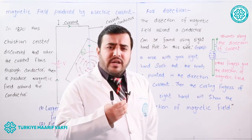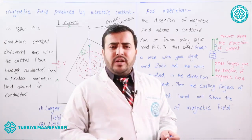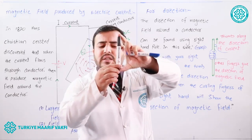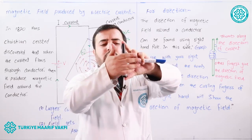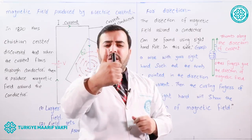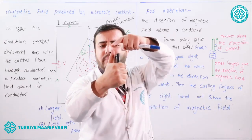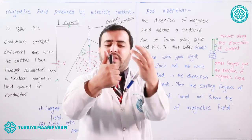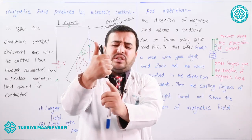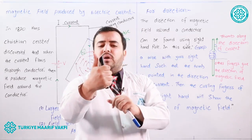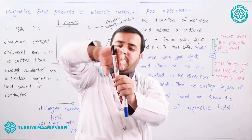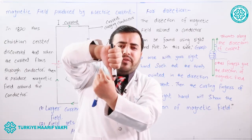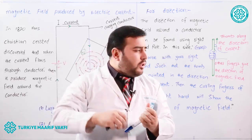The curling fingers indicate the direction of the magnetic field. For example, let us suppose this marker is a conductor and the current is flowing from downward to upward. Put this conductor in your right hand such that the thumb indicates the direction of current — flowing from downward to upward. The curling fingers will then show the direction of the magnetic field. If we reverse the direction of the current — moving from upward to downward — then the direction of the magnetic field will also be reversed.